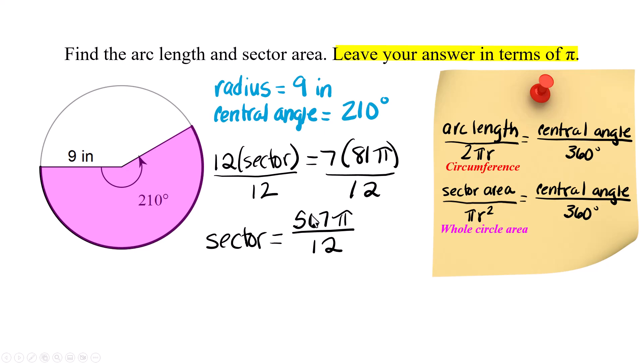And I can reduce these. I can divide a 3 out of both of these. So that's going to get me 189π over 4 and it's inches squared because we are talking about area.